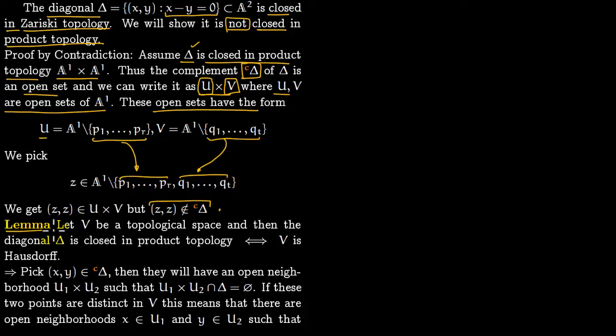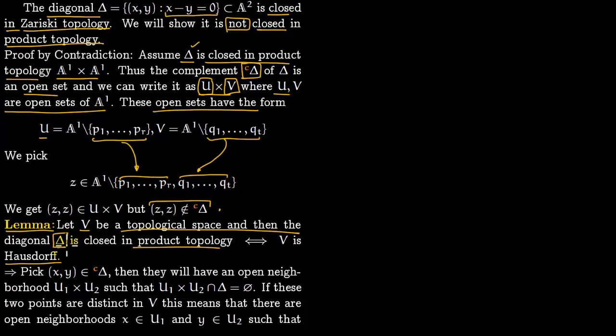We now prove an important lemma. This lemma will not be used directly, but it helps us build the connection between separatedness and Hausdorffness and show that they are analogous to each other. For a topological space V, the diagonal is closed in the product topology if and only if V is Hausdorff. In the Zariski topology, V is not Hausdorff and the diagonal is not closed in the product topology, so this lemma does not apply directly — but we are showing that separatedness is an analog of Hausdorffness.